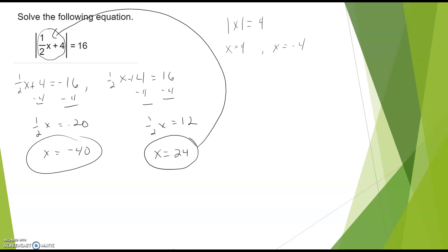Remember, we can always check those. ½ of 24 is 12, plus 4 is 16. That gives us the positive 16. ½ of negative 40 is negative 20, plus 4 is negative 16. Absolute value gives us 16. Easy ones.